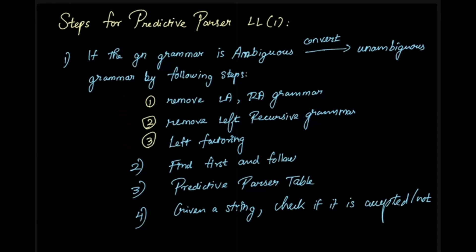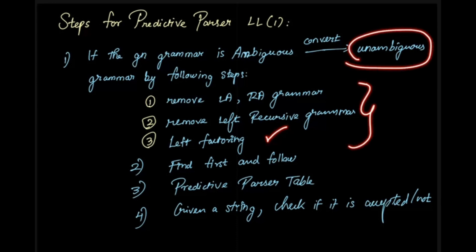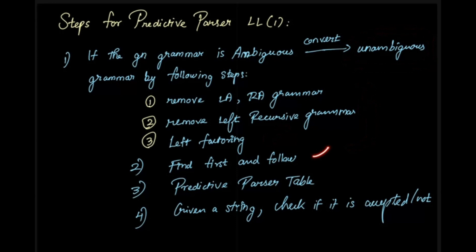There are three steps. First, we handle left-associative and right-associative grammar and remove it. Then, we remove left recursion from the grammar. Then, we perform left-factoring. After that, we work with the unambiguous grammar, compute the FIRST and FOLLOW sets, construct the Predictive Parser table, and use it to validate whether a string belongs to the language.